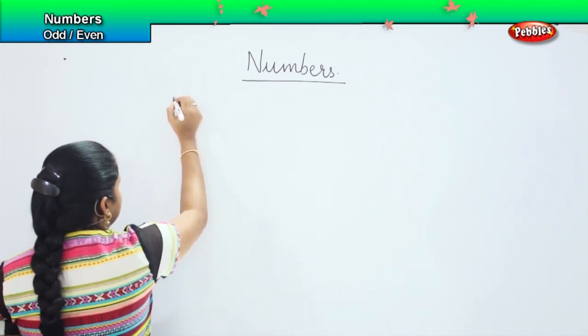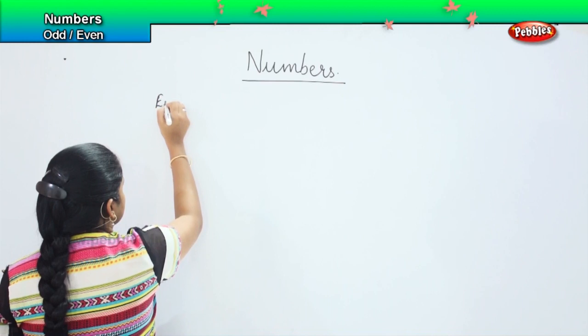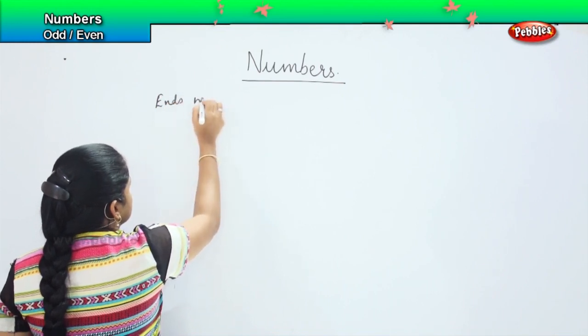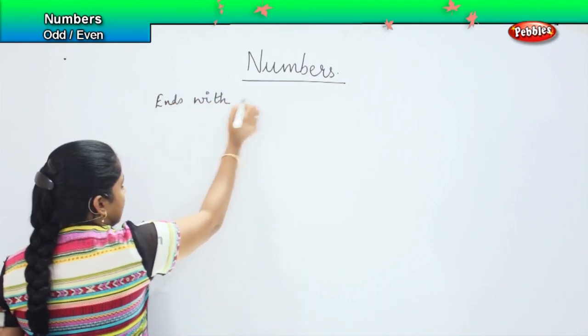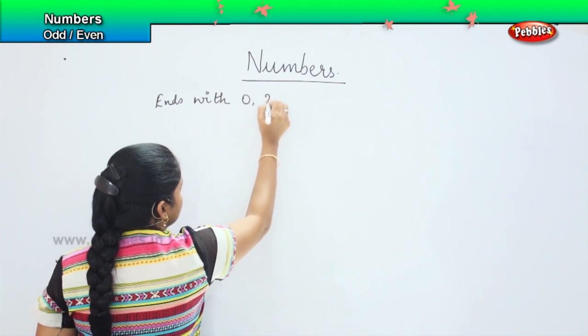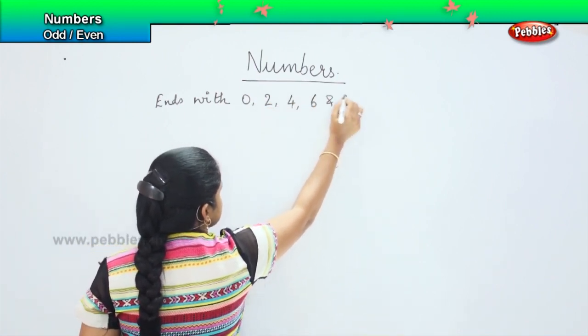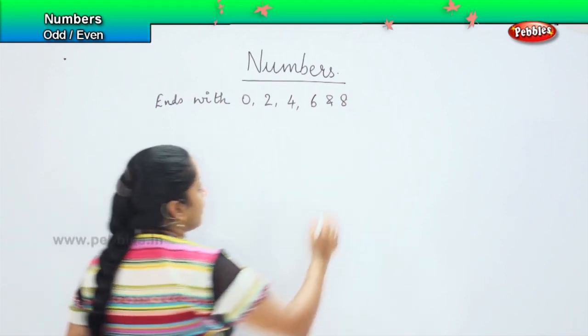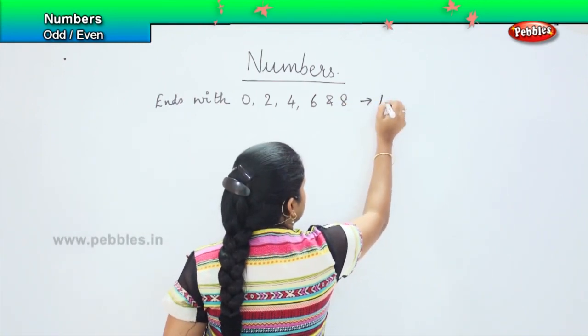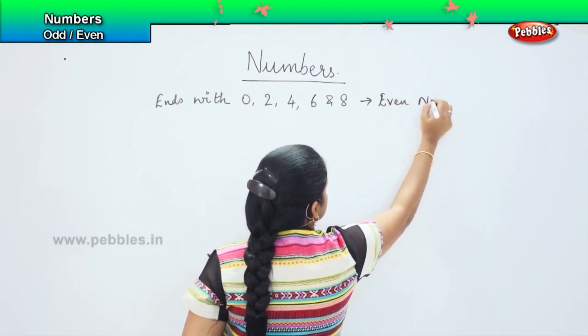Whenever a number ends with 0, 2, 4, 6, and 8, they are called even numbers.